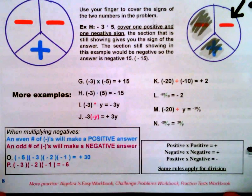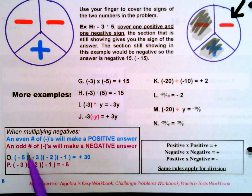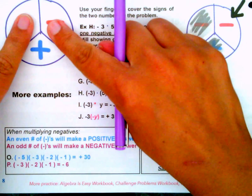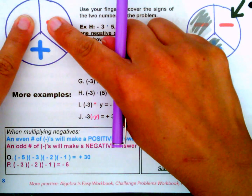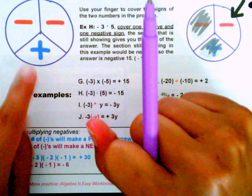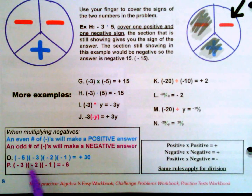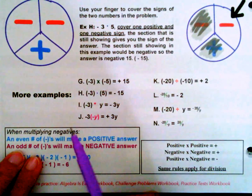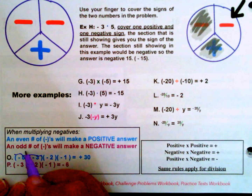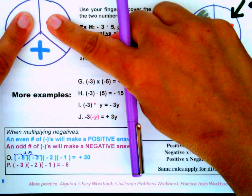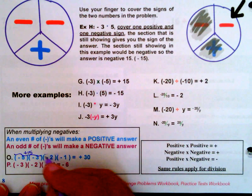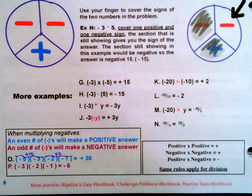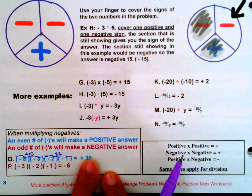When you have several negatives being multiplied together, keep this in mind: an even number of negatives makes a positive answer. Negative 5 times negative 3 equals positive 15, and negative 2 times negative 1 equals positive 2. So positive 15 times positive 2 equals positive 30. With four negatives here — an even number — the result is always positive.